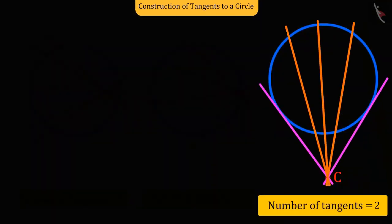And only two tangent lines can be drawn from the point outside the circle.